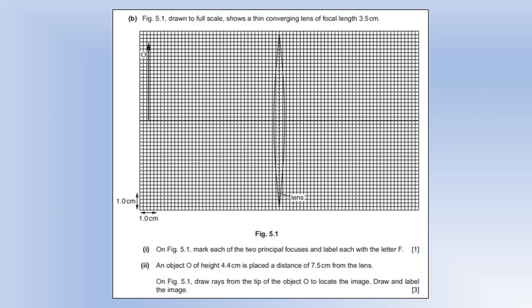So we're going to draw a diagram to show a converging lens and it tells us it has a focal length of 3.5 centimeters. So the first thing we need to do is mark the two principal foci with the letter F. So the principal focus will be one focal length away from the center of the lens in either direction. So those, I've marked them with an X on here, those will be the principal foci.